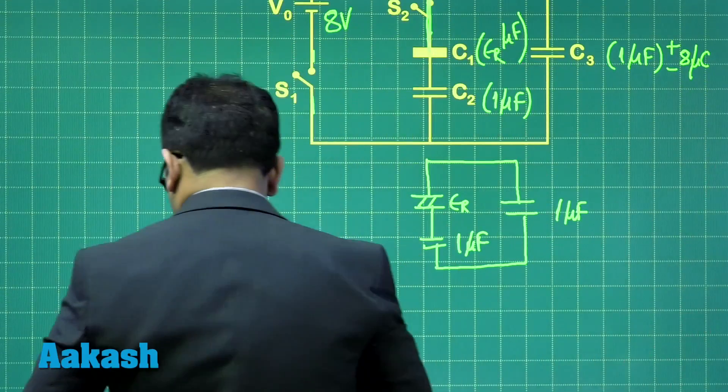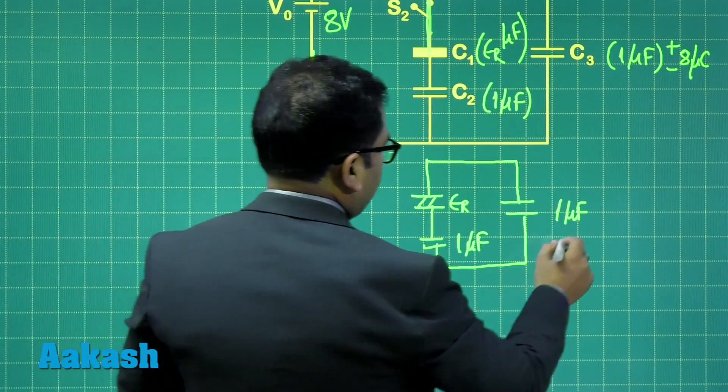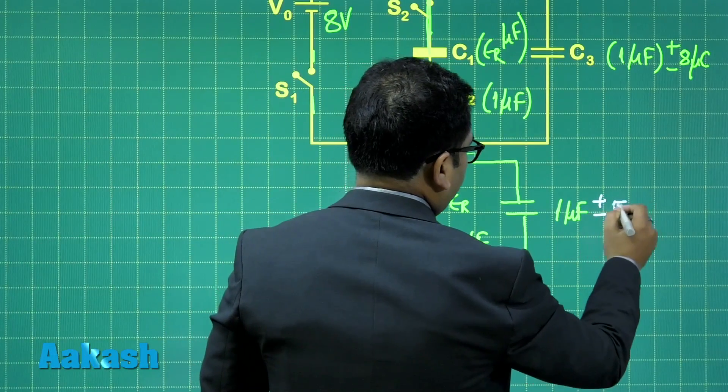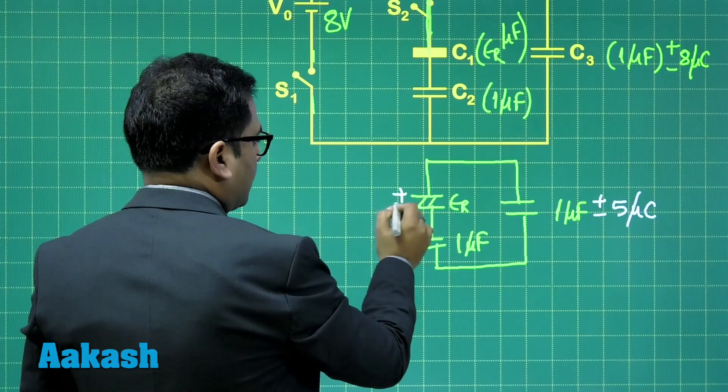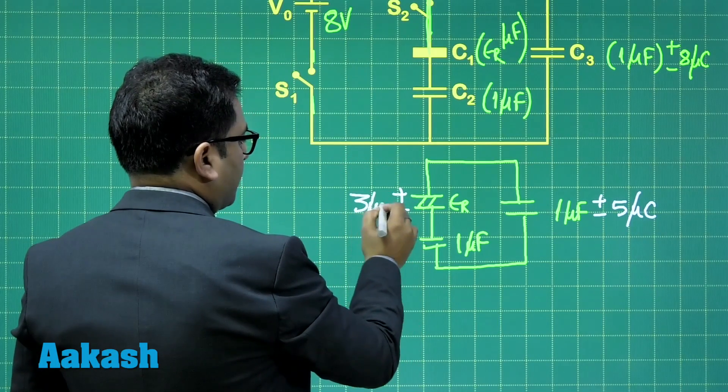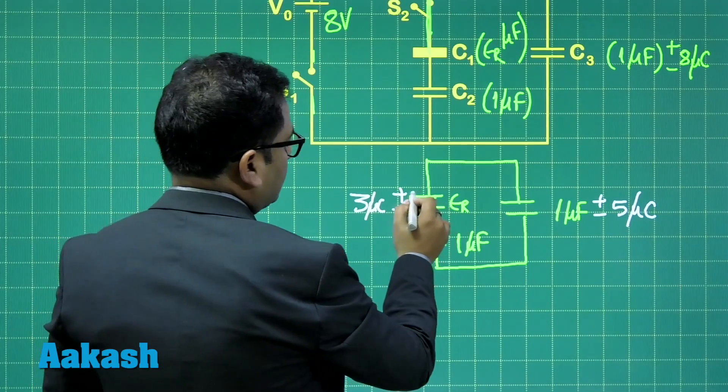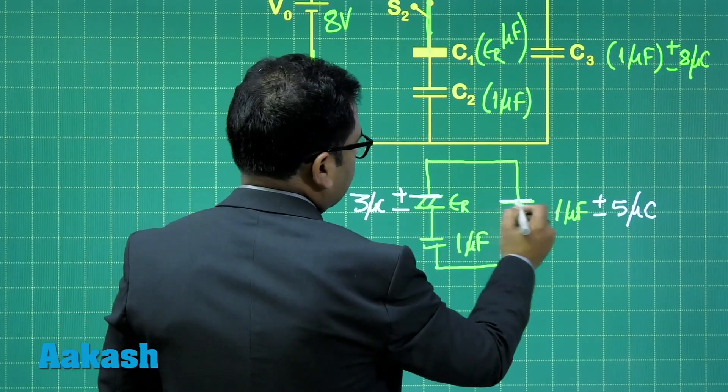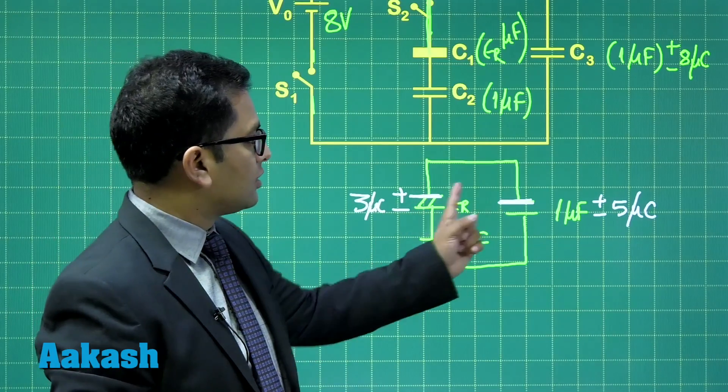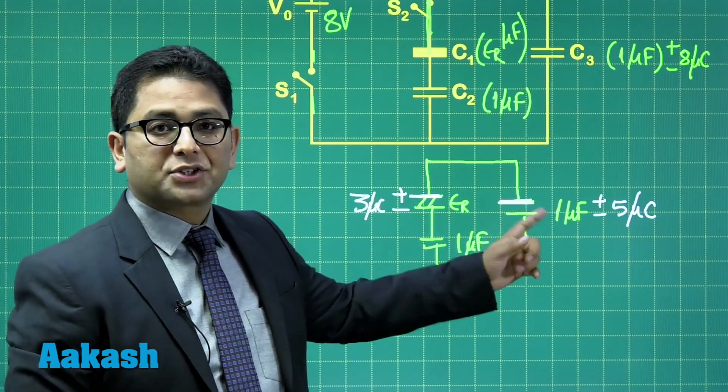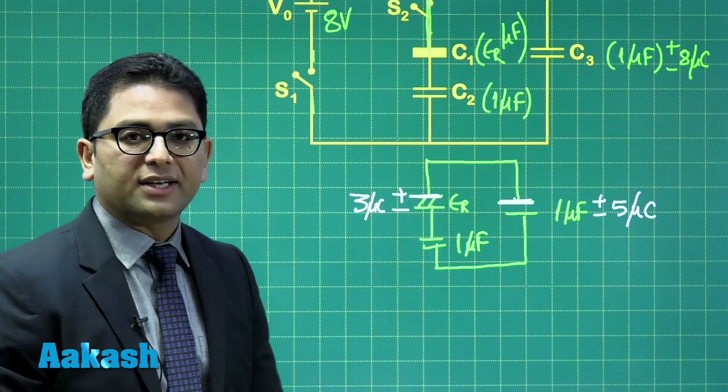So, 5 microcoulomb, that means what I require is, if this is 5 microcoulomb, then quite obviously, this has to be 3 microcoulomb, because the charge on this plate and this plate is conserved. They are connected. Initially, this was having 0, this was having 8. So, now, if this has 5, this must be having 3.